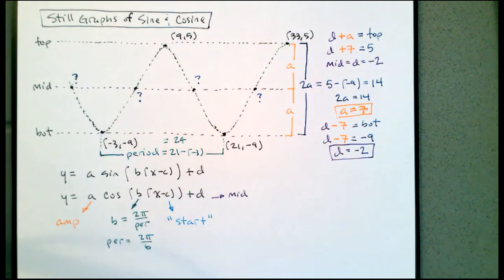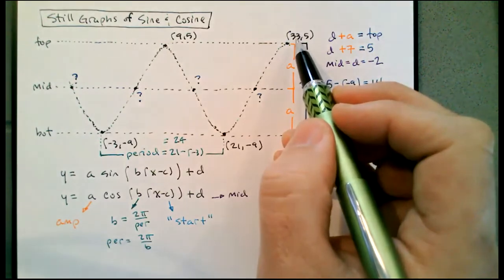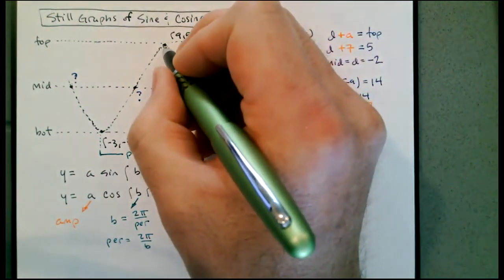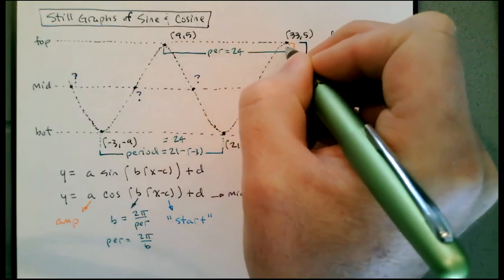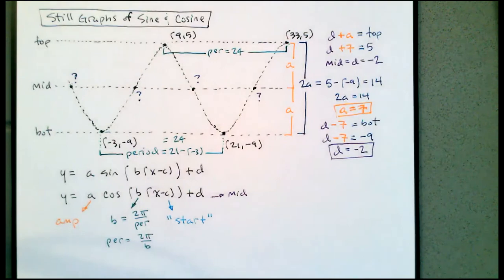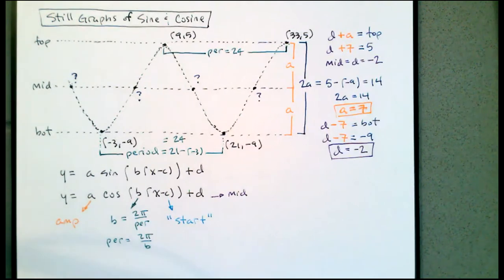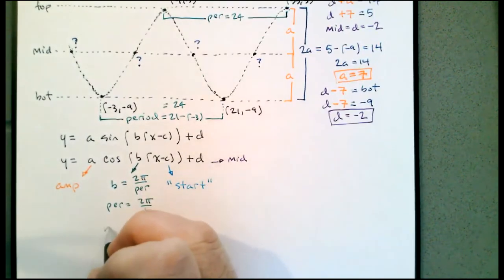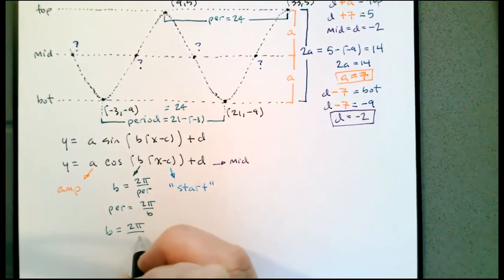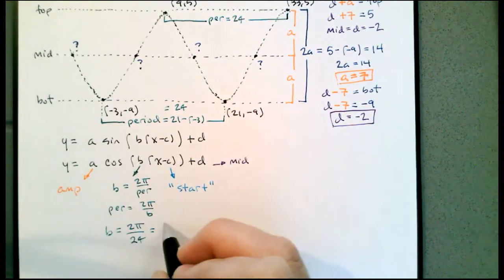You can double-check that against other information. If I take 9 plus 24, I end up at 33 for the next top, which checks out. The period between the tops is also 24. So now I can use that to find B: B is 2π divided by the period, so B equals 2π divided by 24. Simplifying 2 over 24, B equals π over 12.